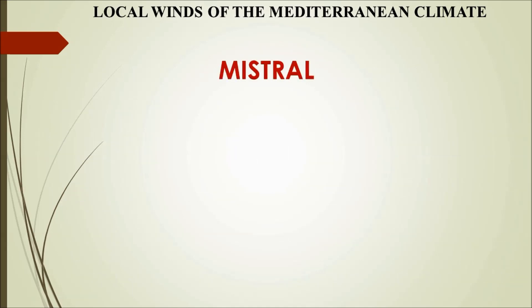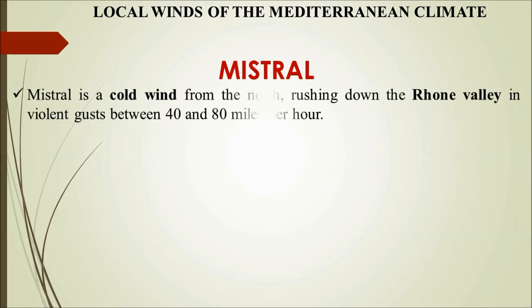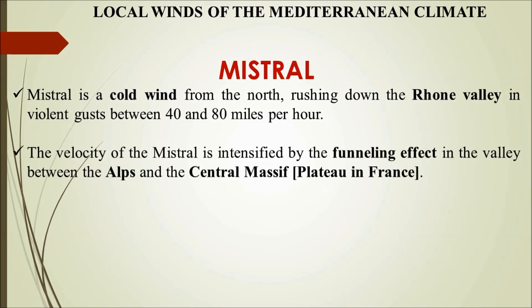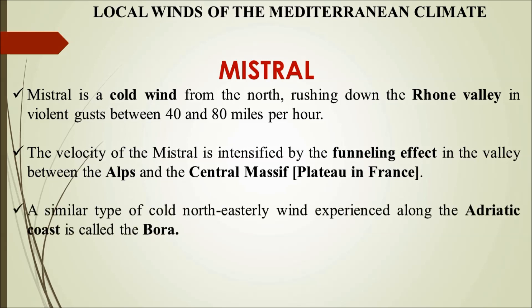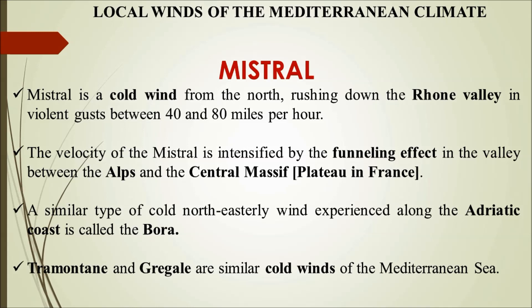The next local wind is Mistral. Unlike Sirocco, which is a hot dry wind, Mistral is a cold wind coming from the north, rushing down the Rhone valley at speeds of 40 to 80 miles per hour. It is a fast, violent wind whose velocity is intensified by the funneling effect of the valleys of the Alps it crosses. A similar cold northeasterly wind experienced along the Adriatic coast is called Bora.